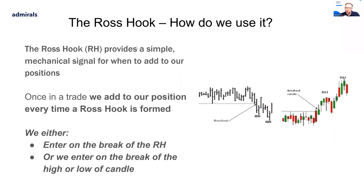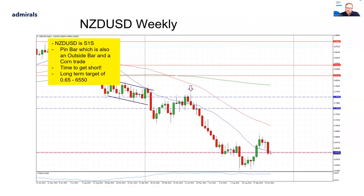Here's an example from the Kiwi dollar. This was in a proprietary environment I call a 'stand on sell' — I was already looking to be a seller on Kiwi against the dollar. As I said earlier, I look to buy strength and sell weakness. At this particular time, the US dollar was very strong and Kiwi dollar was very weak, so I already had my strategy in place. Price pulled back and created a really nice pin bar, a key reversal candle on the weekly chart. The initial trade was running down to a target of around 6550 — the longer term target on the weekly chart.